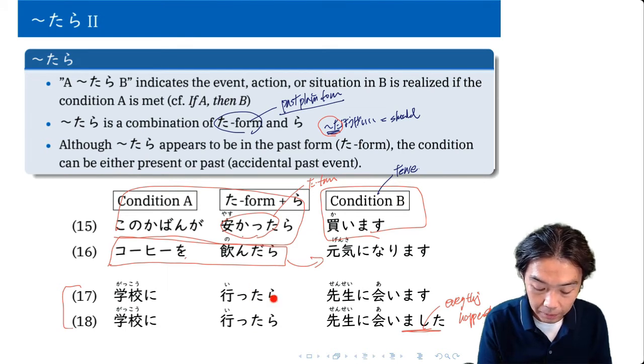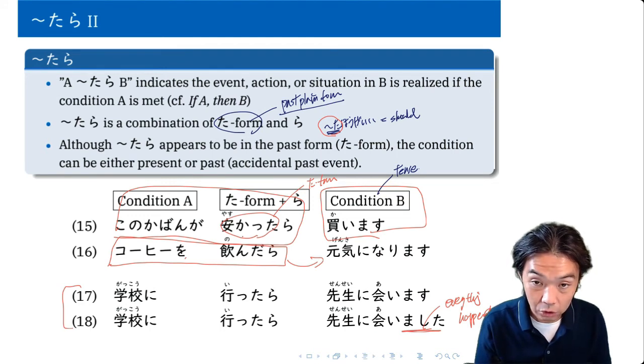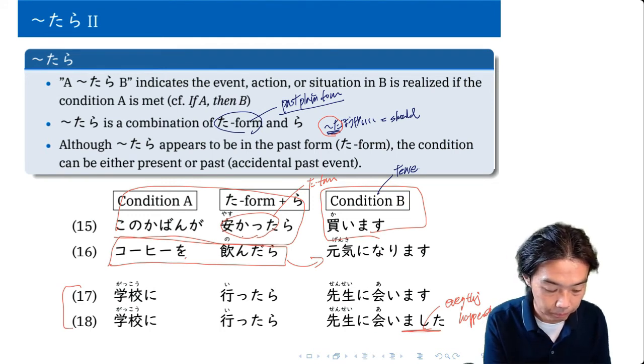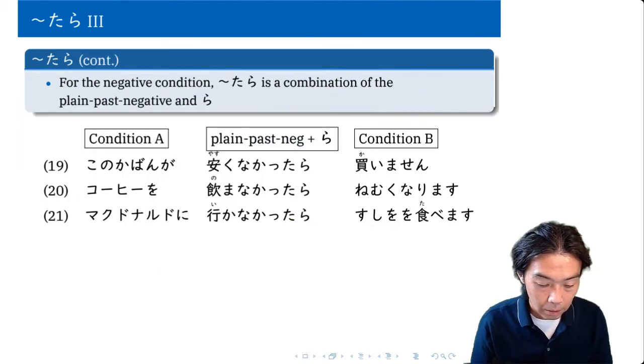So again, Tara has nothing to do with the tense. It doesn't indicate anything about if the event happens or not. The tense in the conditional B tells you whether the situation has already happened.